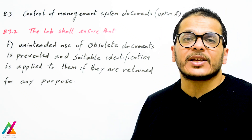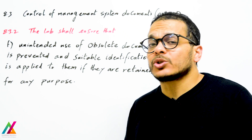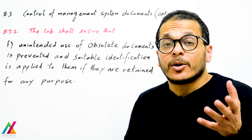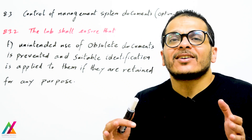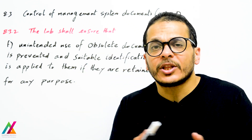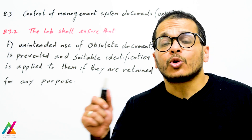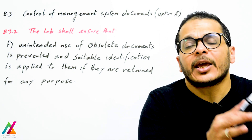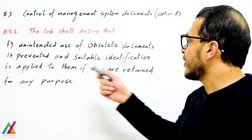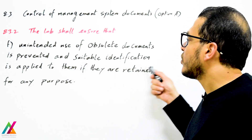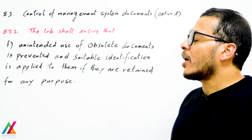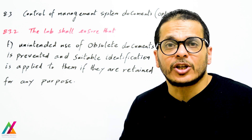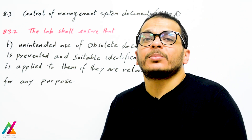The lab shall ensure that unintended use of obsolete documents is prevented. Obsolete documents cannot be used and shall be removed from all units, but may be retained by the quality lead for further reference — provided they are marked with a suitable identification such as 'obsolete.' Controlled documents will be available inside units, while original and obsolete documents are kept with the quality lead. This matches the same requirement in the 2005 edition.